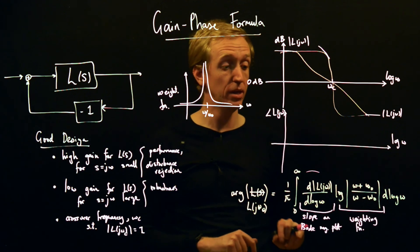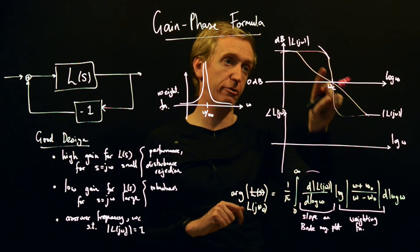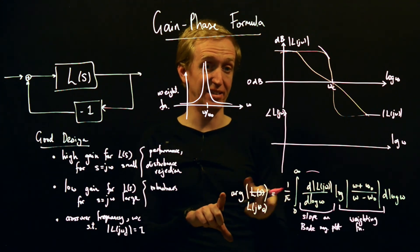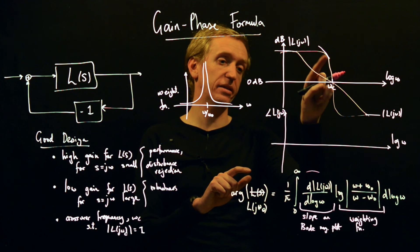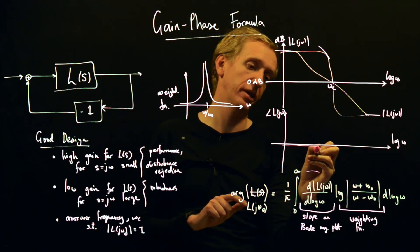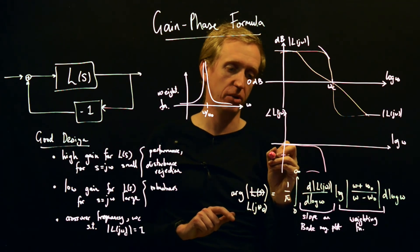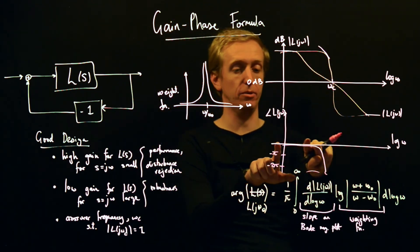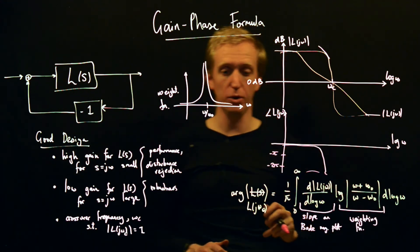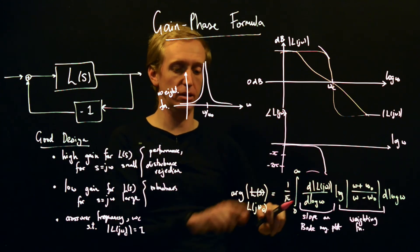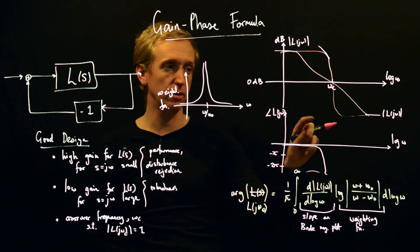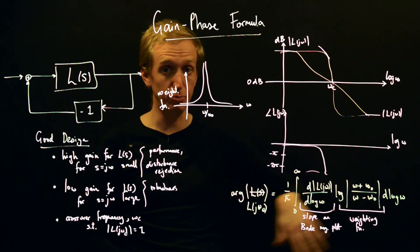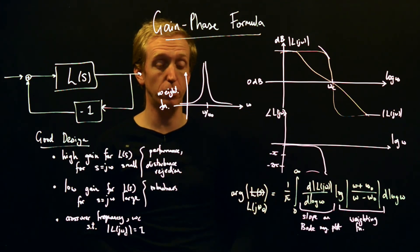Because if we have a very steep slope like we do here, we end up with a very negative argument as well. So a plot like that will necessarily cause the phase to go crashing down. Maybe this is minus π, minus 2π if this is too steep. This causes us to have a massive increase in negative argument. What does that mean? It means that as the magnitude of our Nyquist diagram goes from high to low, our phase becomes very negative, which means we're very likely to encircle the minus one point.